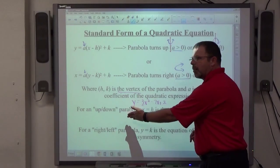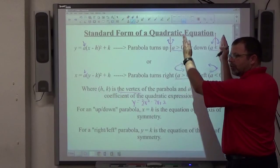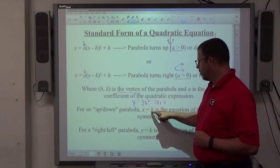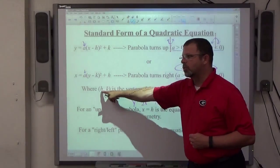So if an up-down parabola is happening, the axis of symmetry is vertical, it's going to be an x equals number equation, and x equals h, because that's the x-coordinate of the vertex.